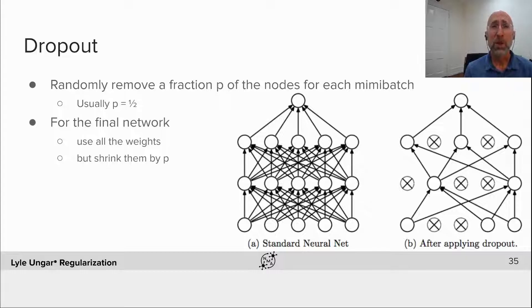In dropout, during training for each mini-batch—misspelled there—what we're going to do is pick a fraction, usually a half, of the nodes in the neural net and drop them out.